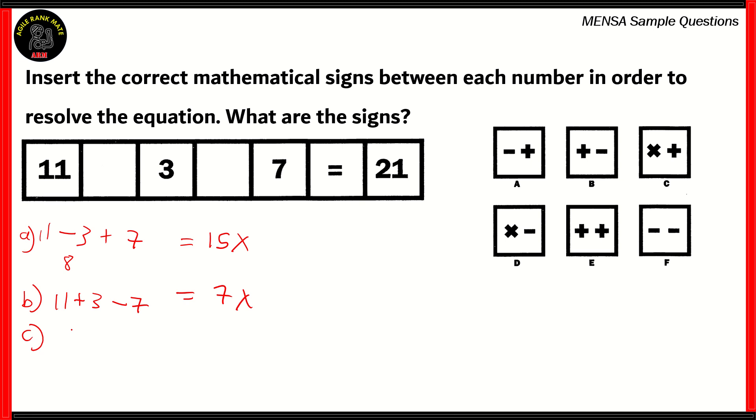What about C? C asks us to multiply first, followed by addition. So 11 times 3 gives you 33. 33 plus 7 gives you 40. Again, incorrect. What about D? D asks us to multiply and then subtract. So 33 minus 7 gives us 26. So again, the answer is wrong. It's not equal to 21.